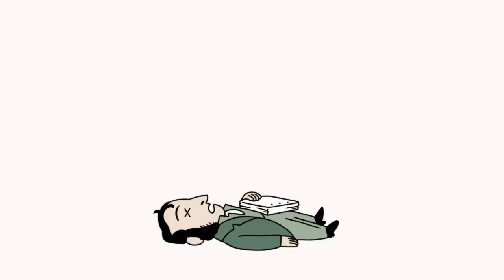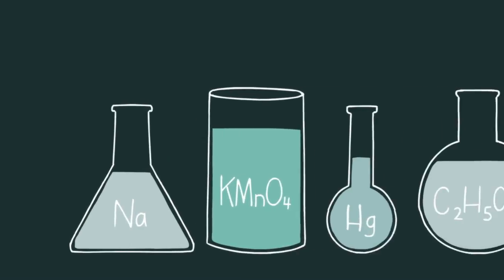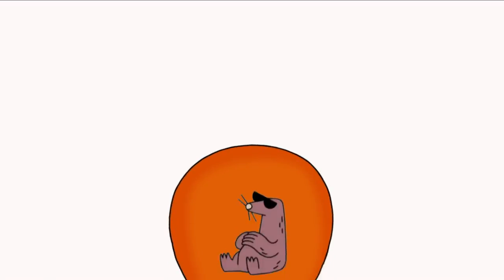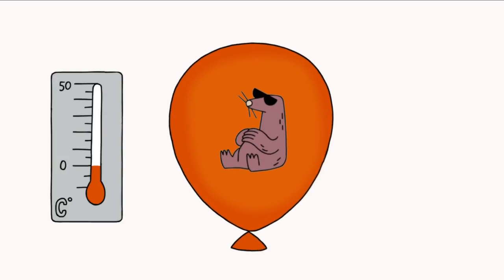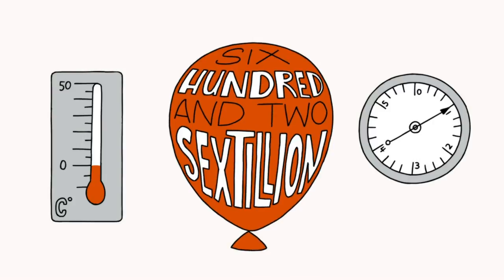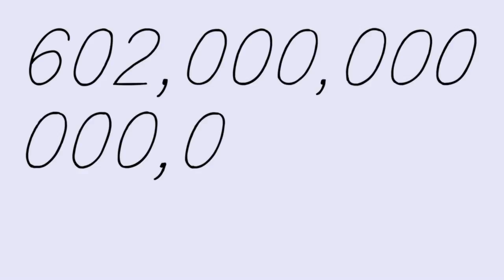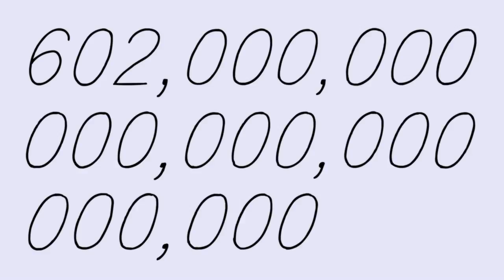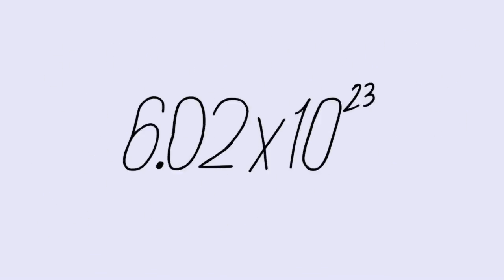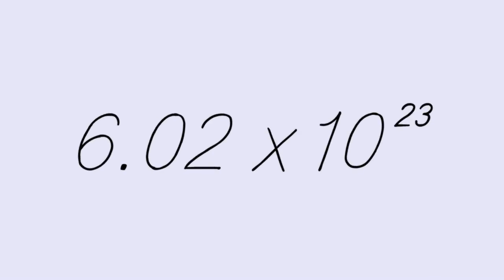Unfortunately, Avogadro died in 1856. Now, the thing is that the amount of particles in even small samples is tremendous. For example, if you have a balloon of any gas at zero degrees Celsius and at a pressure of one atmosphere, then you have precisely 602 sextillion gas particles — that is, 6 with 23 zeros after it — or in scientific notation, 6.02 times 10 to the 23rd particles.